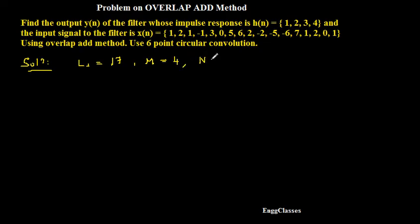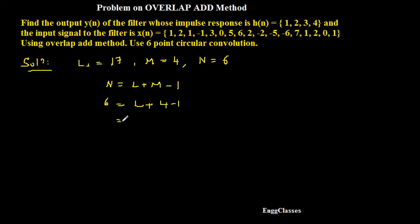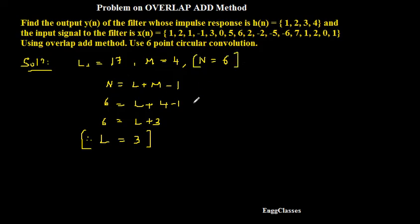Now I can write capital N, which is the length of the input block sequences. Since it says 6-point circular convolution, N must be 6. Using the formula N = L + M − 1, and N is given as 6 and M is 4: 6 = L + 3, therefore L equals 3. This means I have to divide the input data sequence x[n] into blocks of length 6, where 3 samples come from the input data sequence and the remaining 3 are zeros.